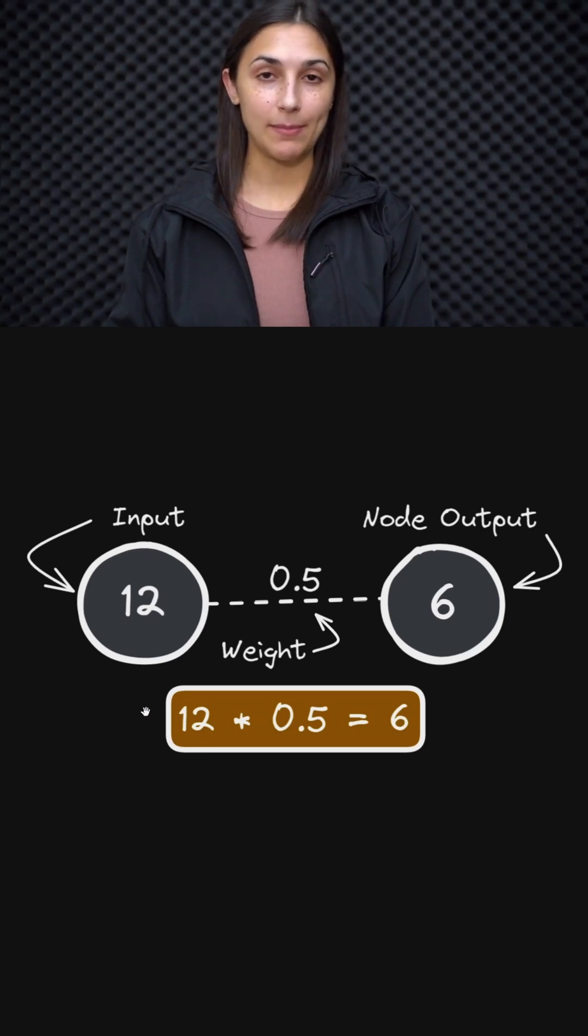Suppose we have some input that we pass to a network and that our input only has one input feature. That's illustrated with this 12 here. This is our input data.